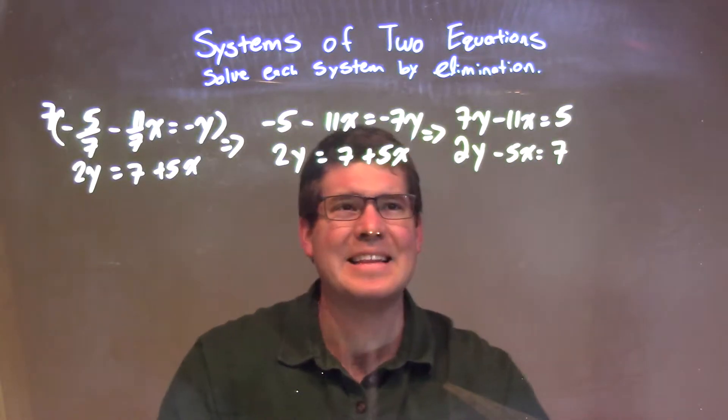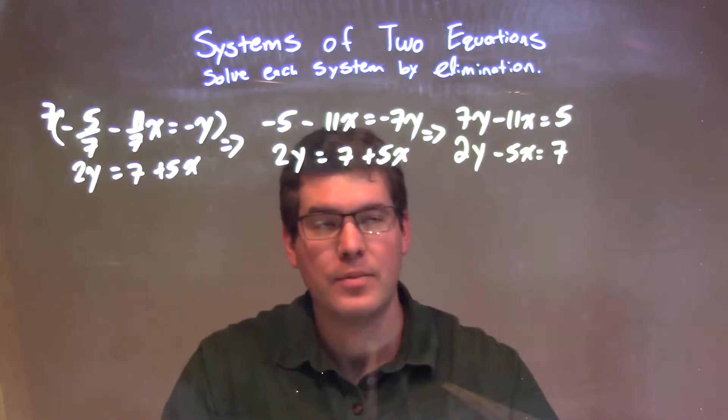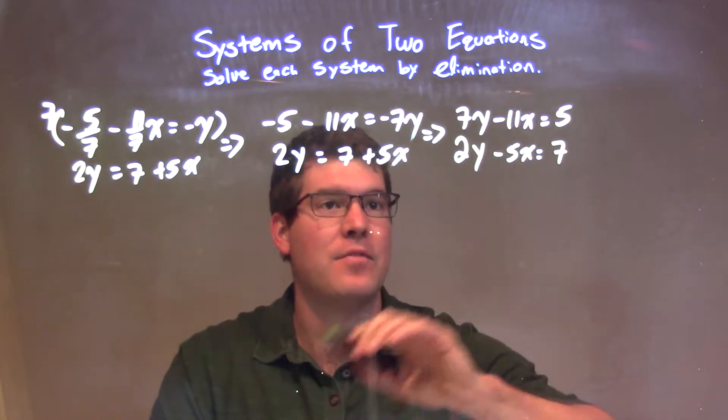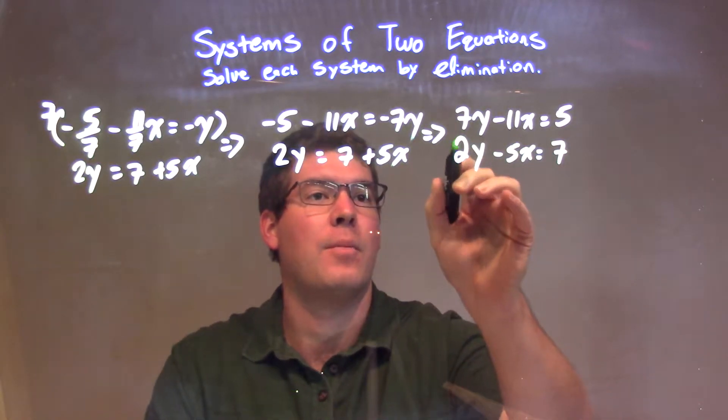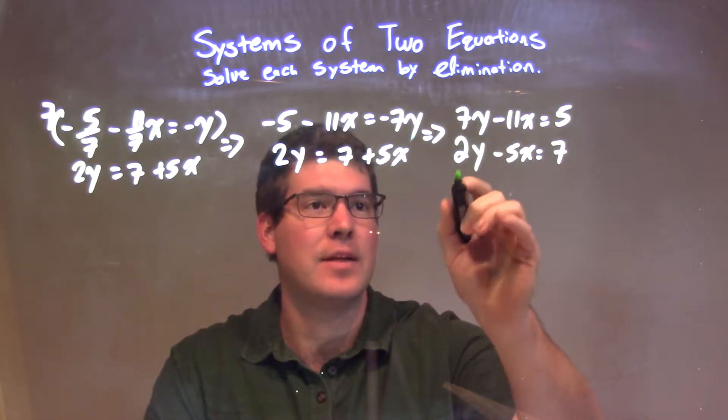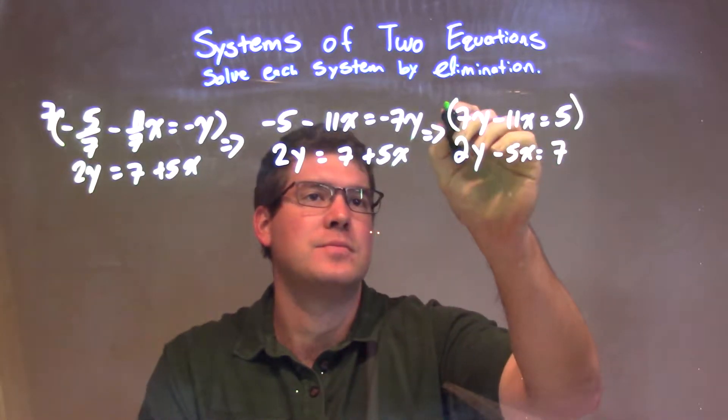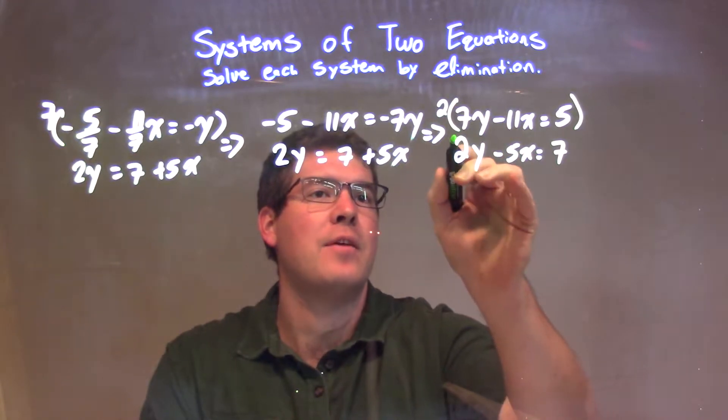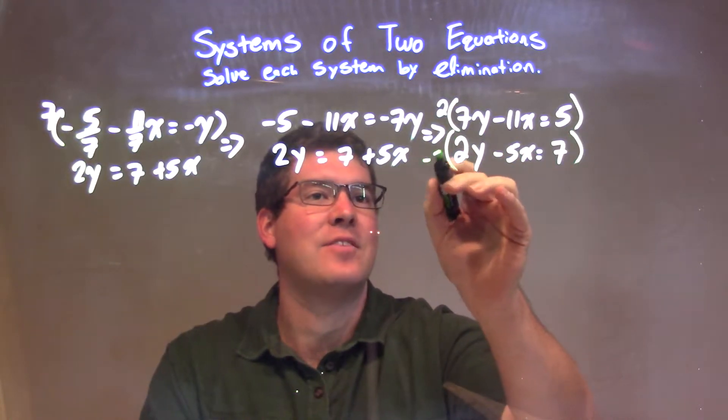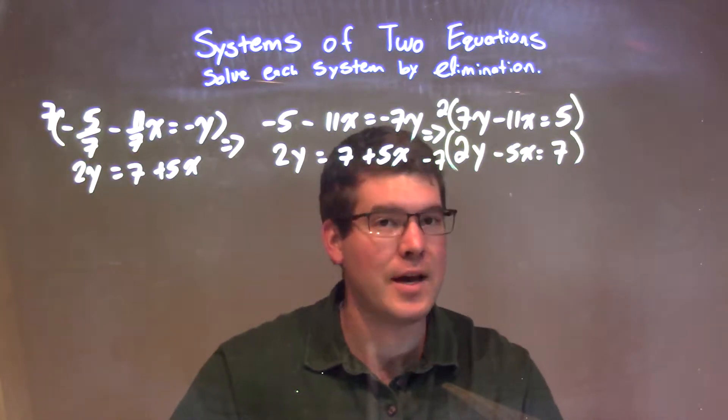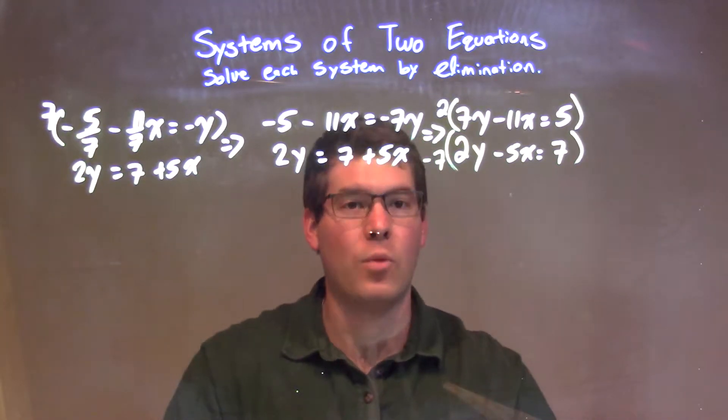Now I want to try to eliminate one of my variables. I see the 7y and the 2y. If I multiply both of these by a number, I can get something that eliminates. The top equation, if I multiply that by 2, and this one, the bottom one, by negative 7. 2 times 7 is 14, and negative 7 times 2 is negative 14. That should eliminate the y variables.